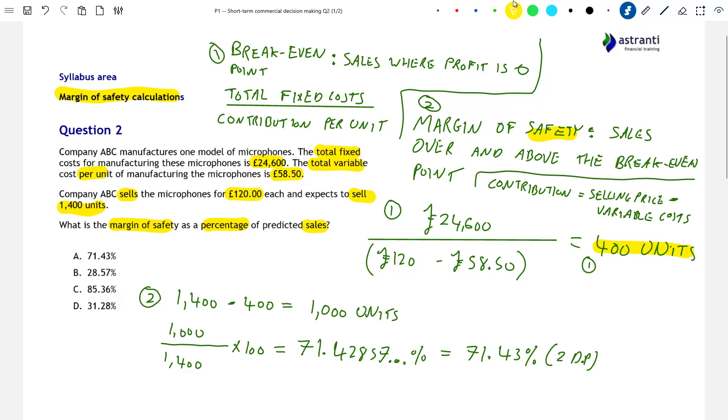And this is our final answer. The number of units that company ABC expects to sell over and above its break even point expressed as a percentage of its total predicted sales. And this, looking to our options, is option A.